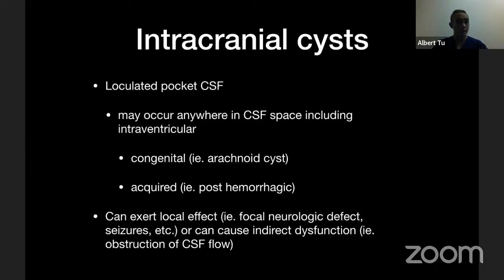These cysts can occur anywhere in the brain — in the ventricle or outside the brain. You can be born with them, a congenital cyst like an arachnoid cyst, which I'll mostly talk about today. Or you can develop them over time, such as from infection scarring or hemorrhage. These cysts can make you sick in different ways: they can enlarge over time, cause pressure, seizures — not super common, but possible — or cause indirect dysfunction by obstructing normal CSF circulation.